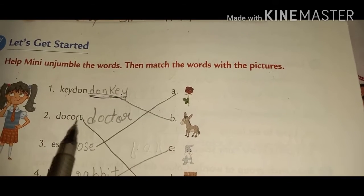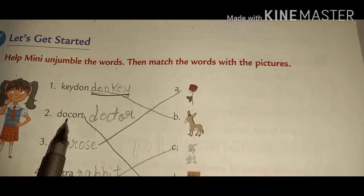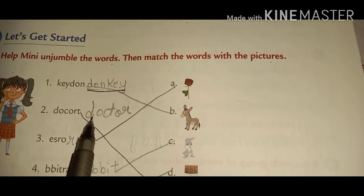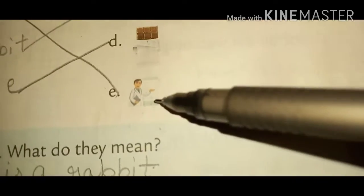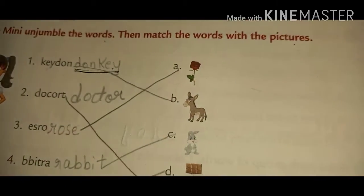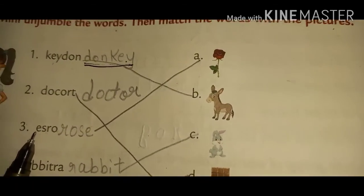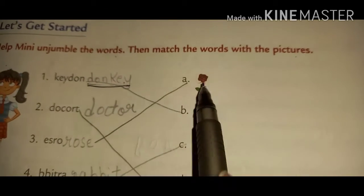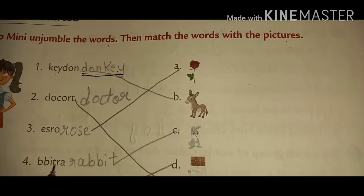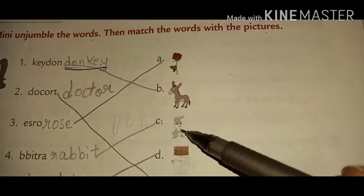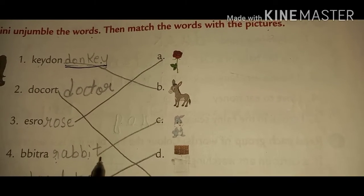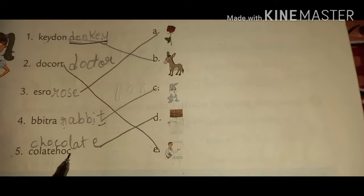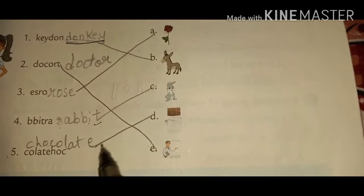D-O-C-O-R-T — this is not a proper word. So the correct spelling is D-O-C-T-O-R — doctor. And you can see here there is a doctor, so match the word with the picture. The third one is E-S-R-O — the correct spelling of the word is R-O-S-E. Then match. Fourth one, B-B-I-T-R-A — you can see here this is a rabbit, so you form the word R-A-B-B-I-T — rabbit.